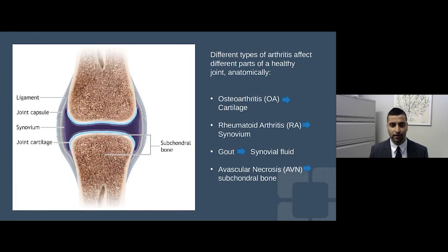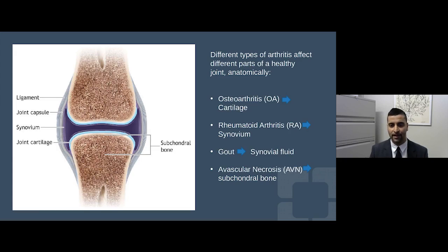Looking closer at the actual joint itself, there are a few different structures: the ends of the bone called the subchondral bone, lined by the joint cartilage, and the lining called the synovium. Different types of arthritis affect different parts of a healthy joint, anatomically speaking.